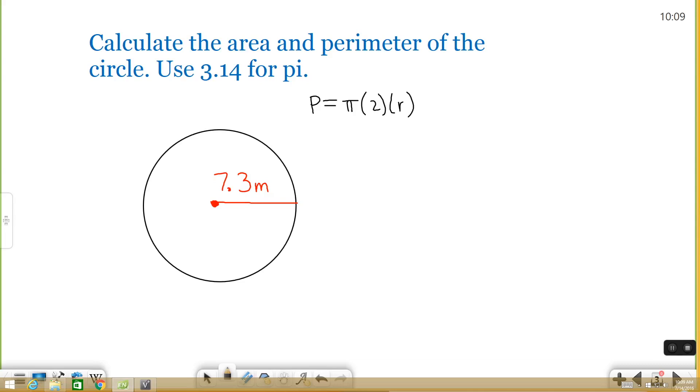But in this case, I have a radius, so I'm going to use this formula. What you want to do is plug in the information you have and solve. So perimeter equals 3.14 times 2 times 7.3. You type this into a calculator, you'll be able to get your answer. And when you do that, you end up getting 45.84.